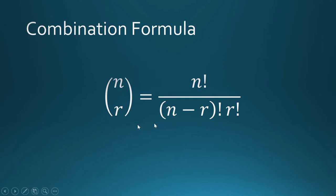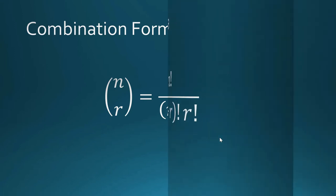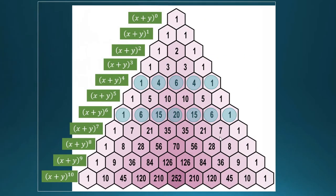We shall show the connection between the Pascal triangle and the combination formula. The combination formula — read as 'n taken r' or 'n combination r' — is equal to n factorial divided by the quantity (n minus r) factorial times r factorial. This is the connection between the combination formula and the Pascal triangle.